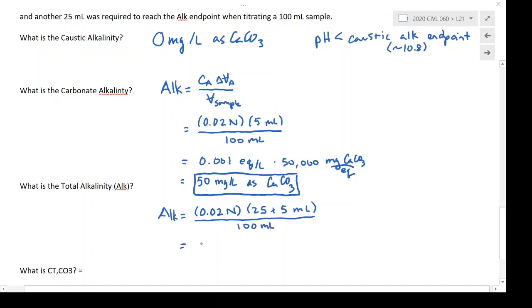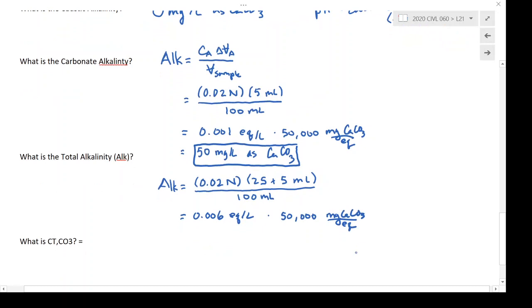And this will give us 0.006 equivalents per liter. Multiply that by 50,000 to convert the unit, and I'm going to get a value of 300 milligrams per liter as CaCO3.